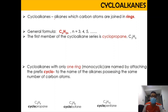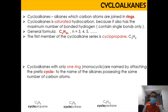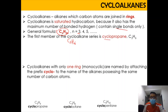Cyclic alkanes are basically alkanes whose carbon atoms are joined in rings. Cyclic alkanes are saturated hydrocarbons because they consist of only single bonds attaching with hydrogen. The general formula of cyclic alkanes is CnH2n, where N starts from 3. So the minimum size is C3H6, which refers to the first member of the cyclic alkanes, which is cyclopropane.